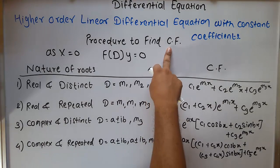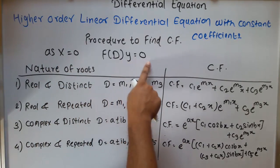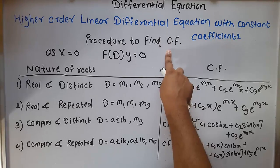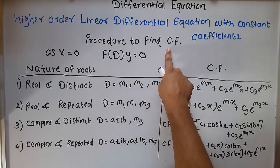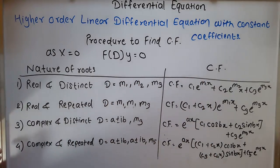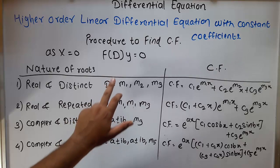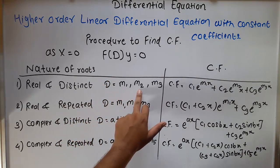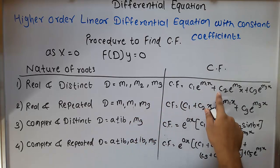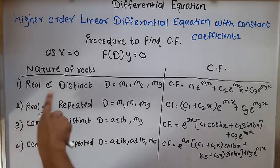Procedure to find the CF (complementary function): when x equals 0, f(D)y equals 0 and the solution is only CF. If x is present, the solution is CF plus particular integral. There are four rules to find the CF. Rule 1 — real and distinct roots: if we get roots m1, m2, m3, then CF = c1·e^(m1·x) + c2·e^(m2·x) + c3·e^(m3·x).